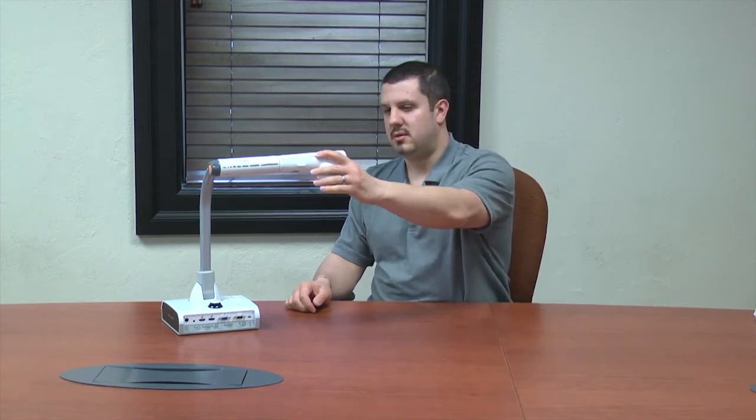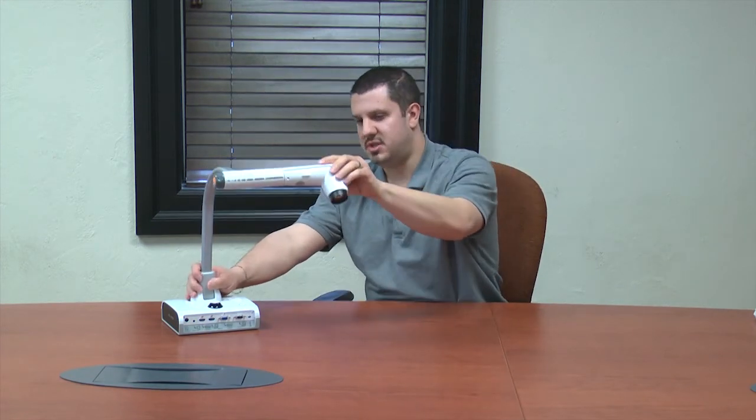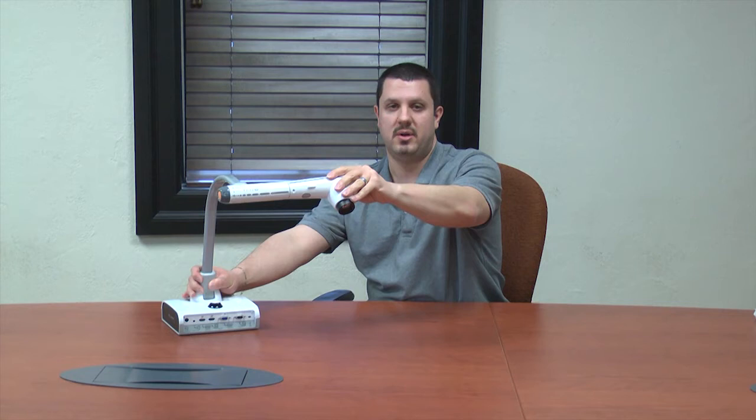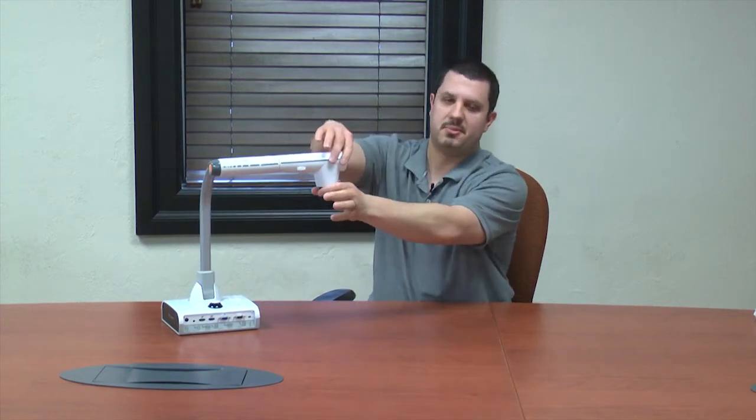Now, there are a few great accessories worth mentioning for this Elmo. One is a microscope adapter. You can turn the lens, adjust it so it lines up right with your microscope. And the adapter is just a tube to fill that gap in there. And now you can display images from your microscope.